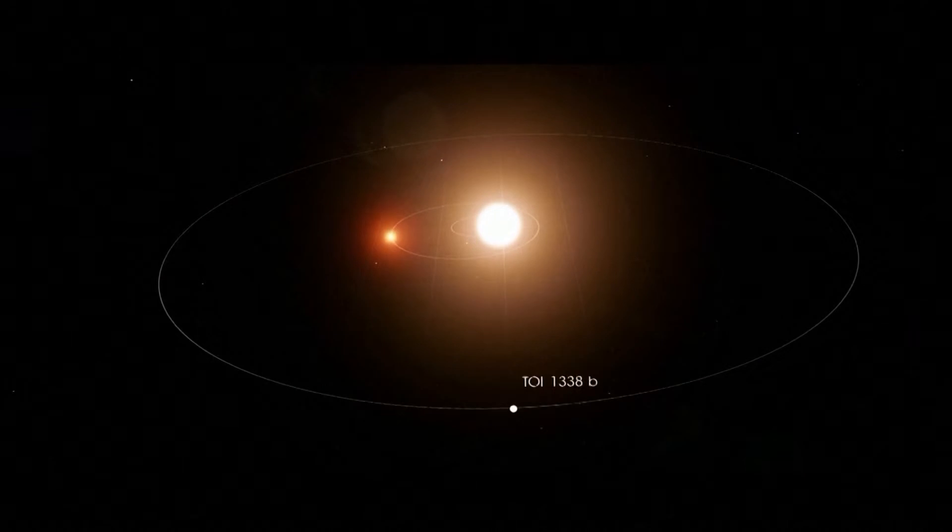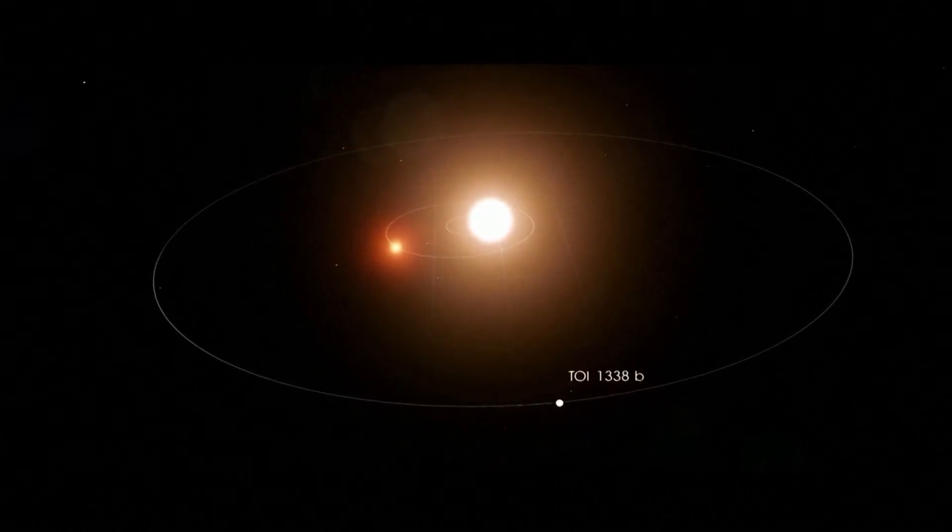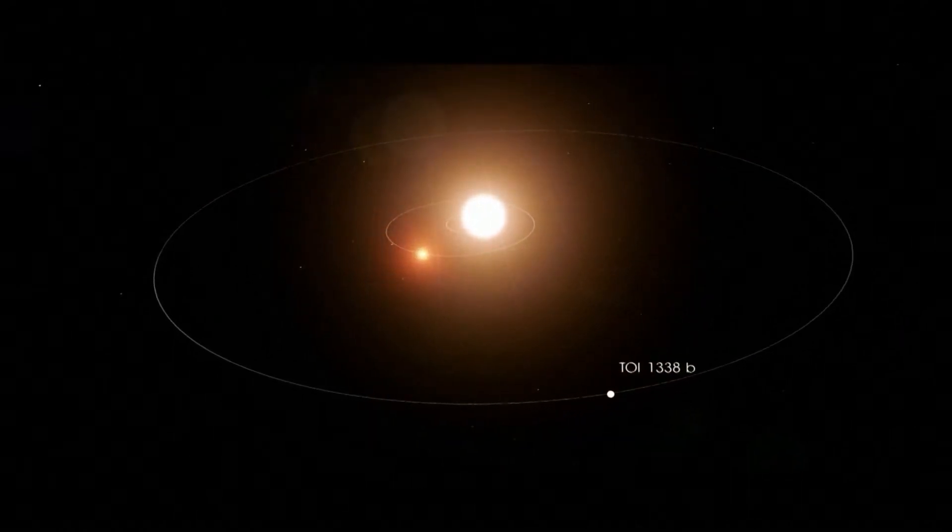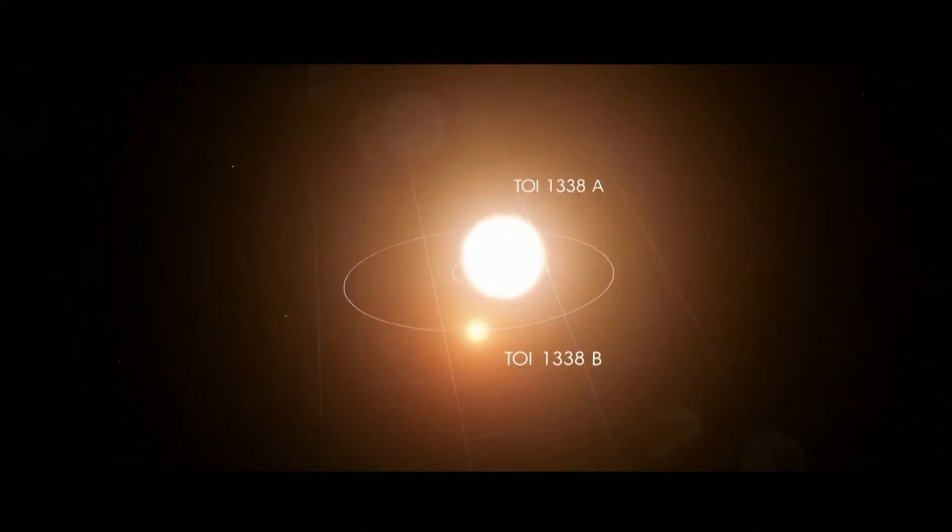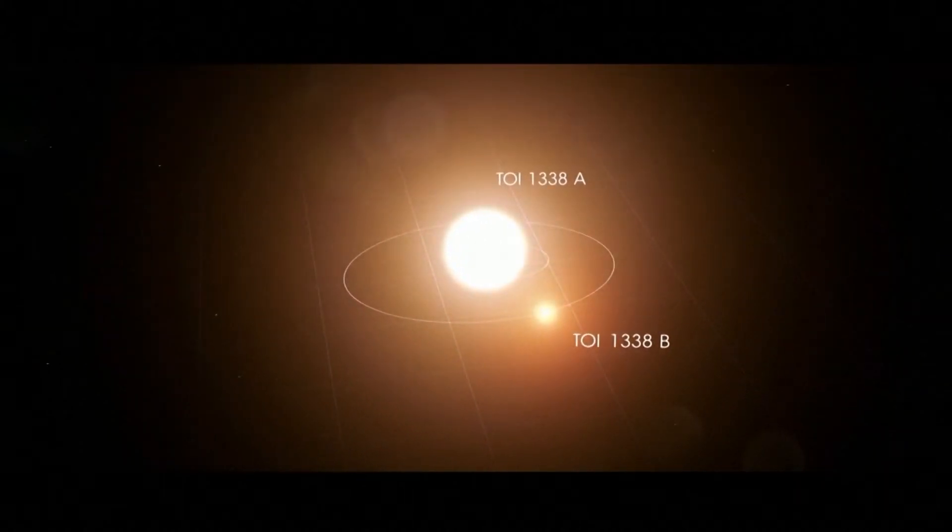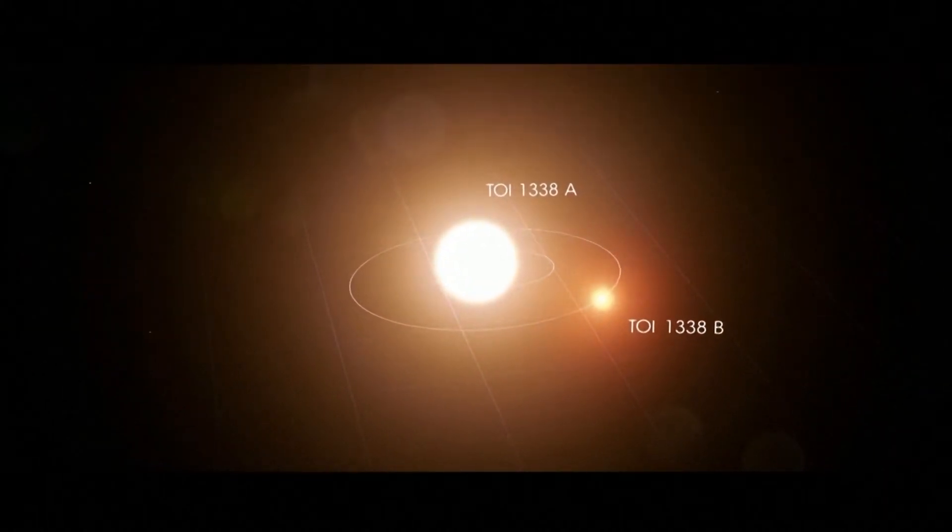The two stars orbit each other and consist of a small, cool M dwarf and one much like the Sun. Together, they form what is called an eclipsing binary, which means the stars regularly pass in front of each other from our point of view.